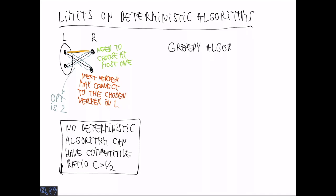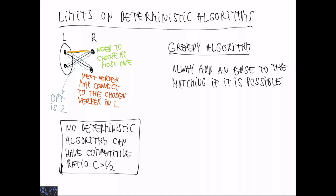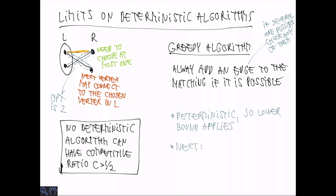In terms of upper bound, there's an algorithmic technique, which is usually the one we try first, which is the greedy approach. And in this context, the greedy algorithm would simply always add an edge to the matching if it's possible. It may be that there are several edges that we could match, but in that case, we just make an arbitrary choice. For example, we might match to the first vertex. Now, this is a deterministic algorithm, so the lower bound applies, and we can have a competitive ratio no better than one half, but as we'll see next, this algorithm is actually one half competitive.